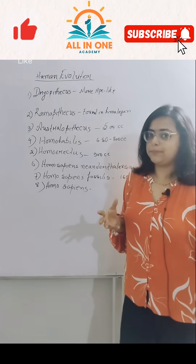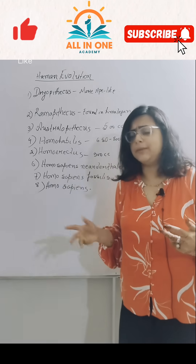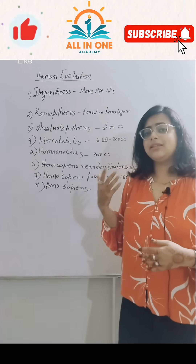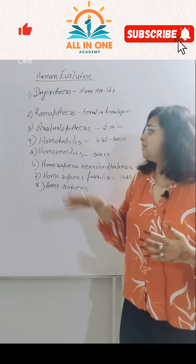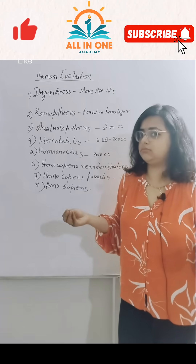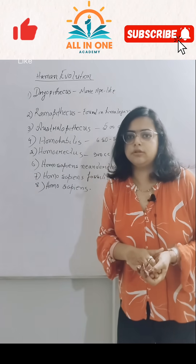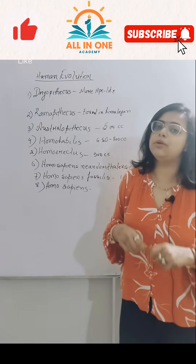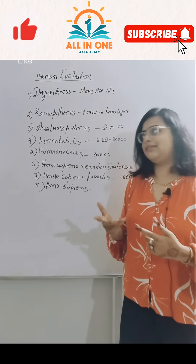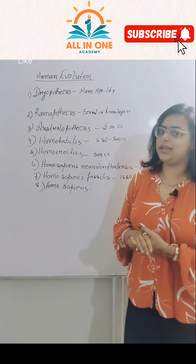Dryopithecus were more like apes, similar to chimpanzees. Second is Ramapithecus, found in the Himalayan and Indian subcontinents — that means the Indian regional area. They were bipedal.